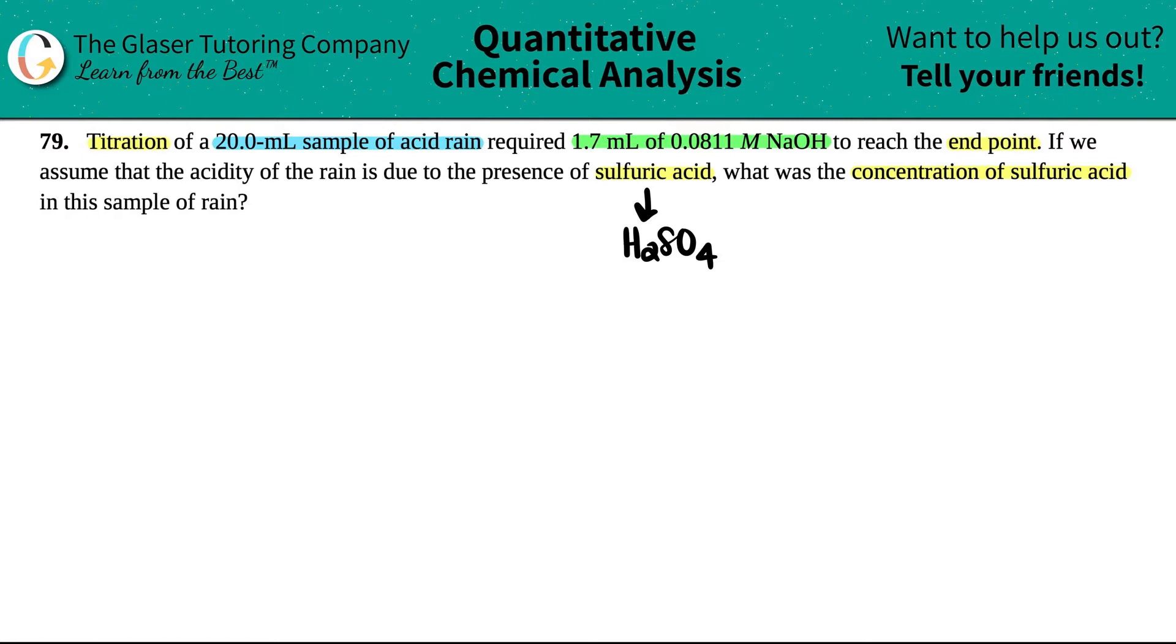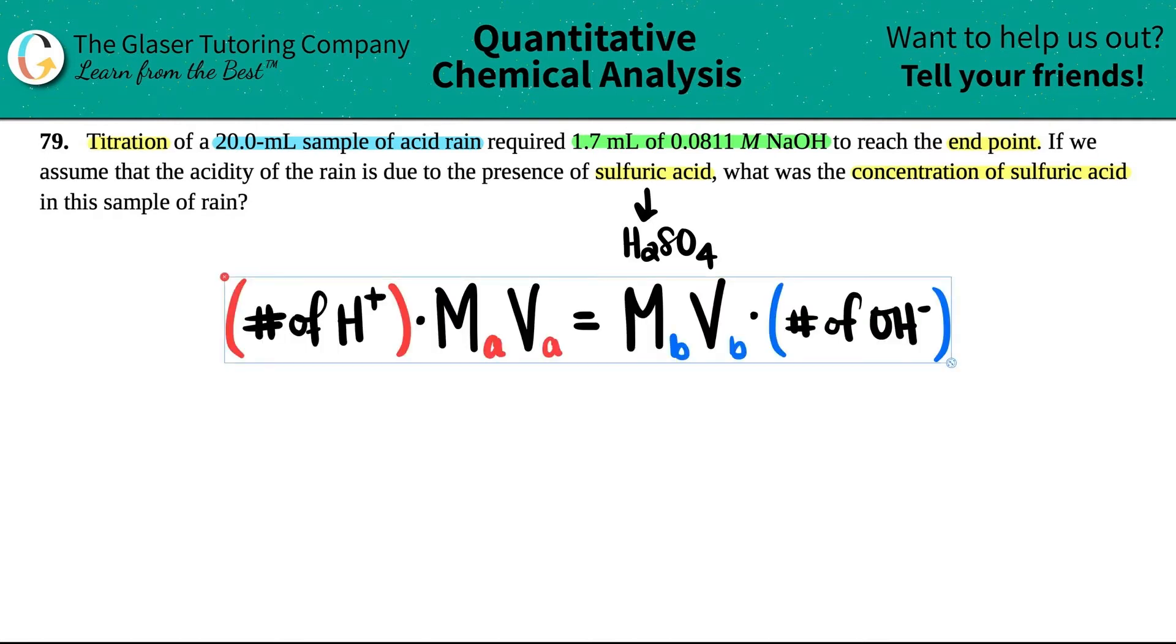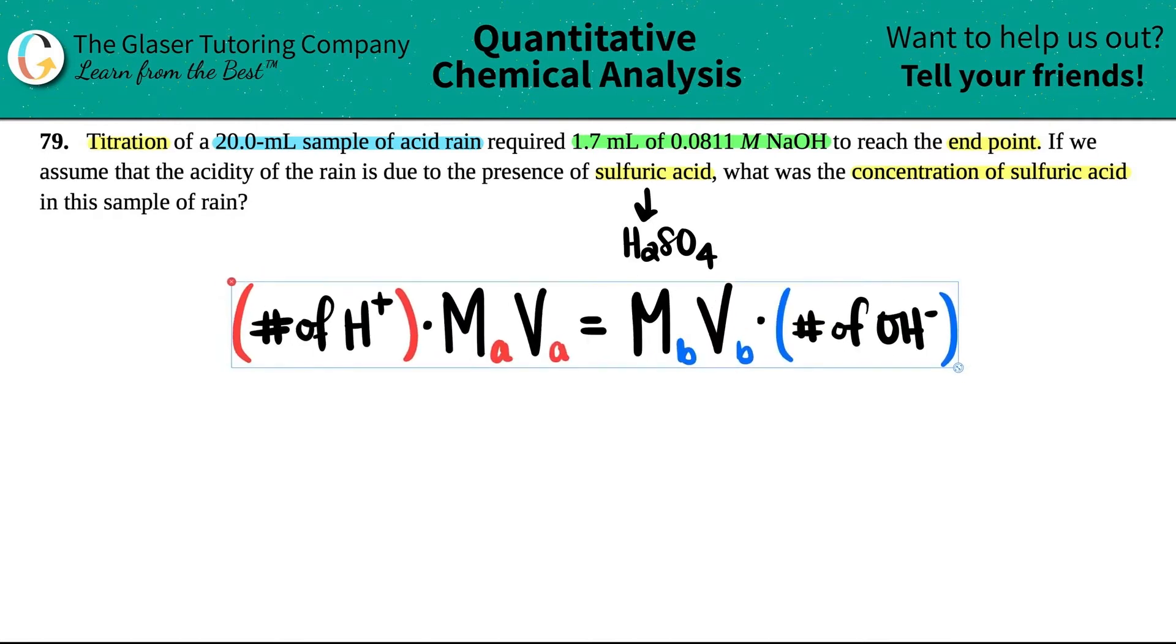When you're titrating with acids and bases, there's a quick shortcut formula that I would love to show you guys. It's basically like the M1V1 equals M2V2 formula, however, it's for acids and bases.